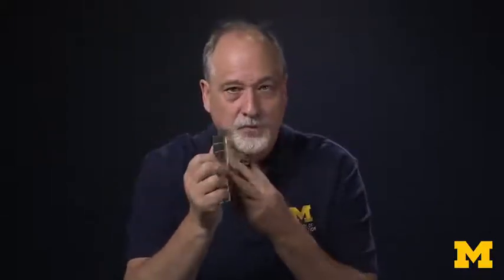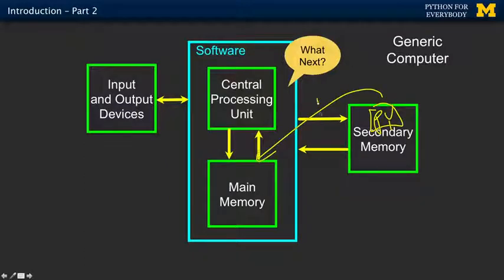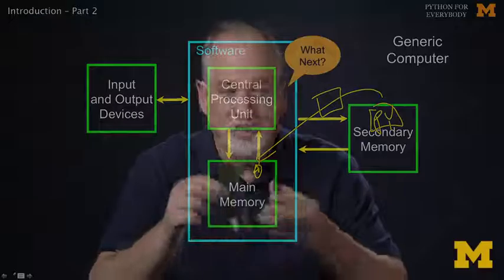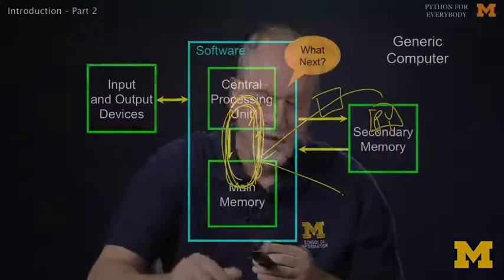Where does it get the answer to what's next? It gets the answer out of memory. When you write a program, you create a file on the secondary memory, like a Python file. That is then loaded into the main memory, translated, and your program is there. When the CPU says what's next, your program feeds its first instruction, then the second, third, fourth. This is called the fetch-execute cycle, and the CPU and main memory are the two parts that participate.